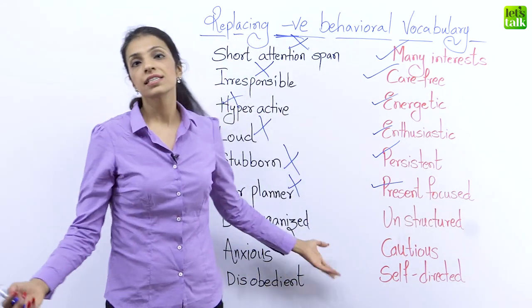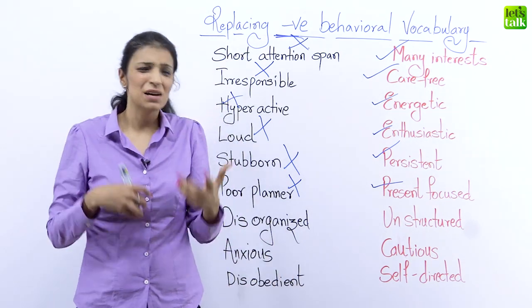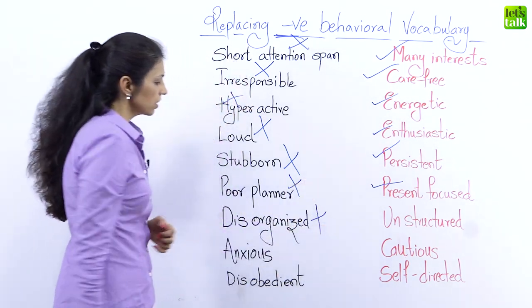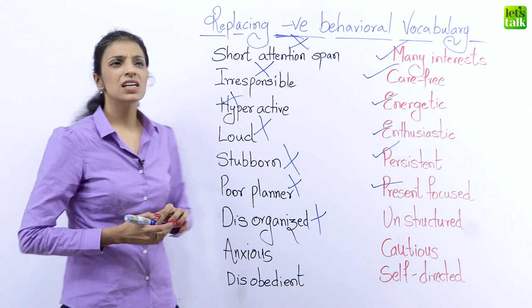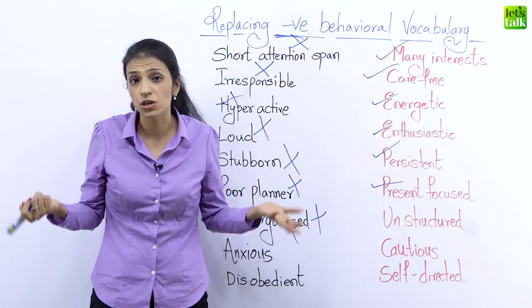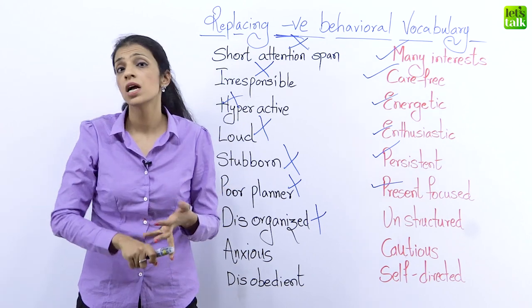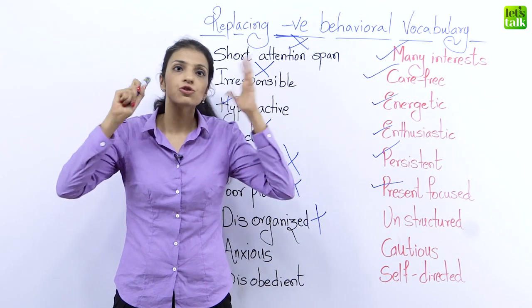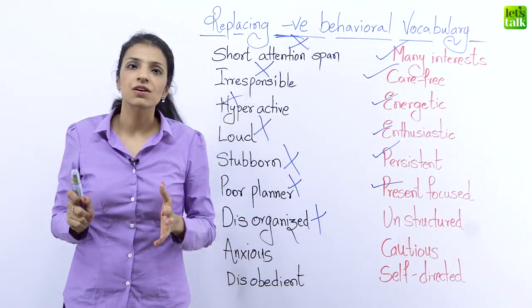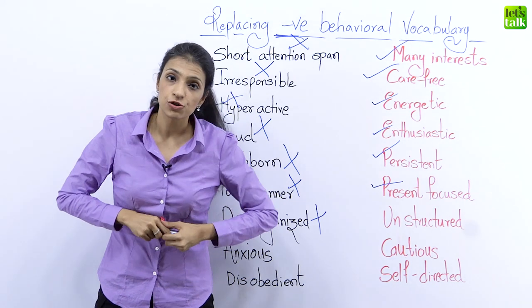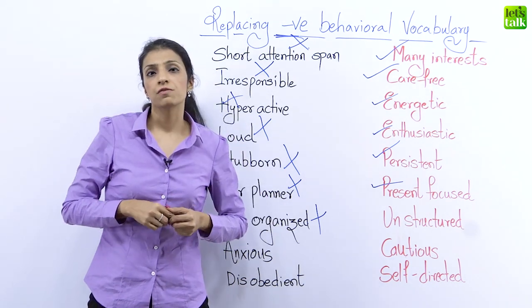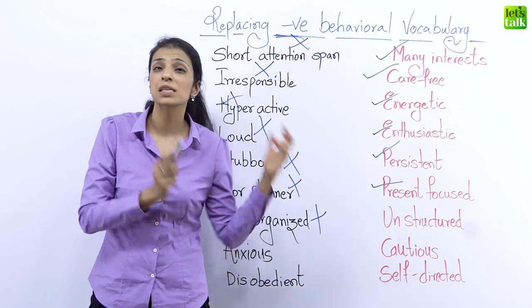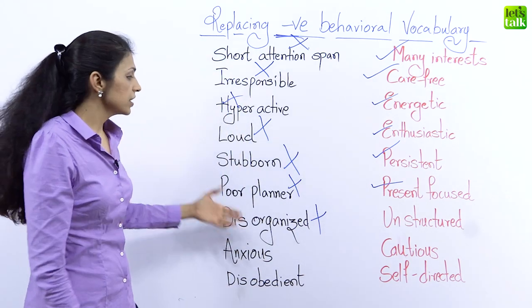The next one is disorganized. I think most of us are disorganized — none of us like it but many of us fall into this category. Disorganized is someone who's not organized, whether it's his cupboard, room, office desk, cabin, or even his own mental structure. You're not organized, you're disorganized. Again a very negative way to describe someone — if you say my friend is disorganized at work or their cupboard is completely disorganized, believe me it's not a very nice thing.